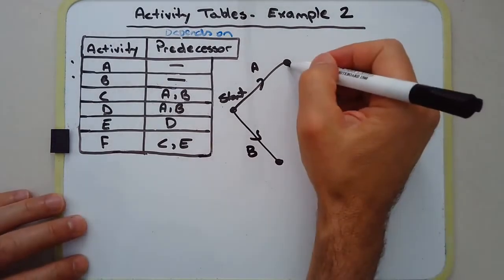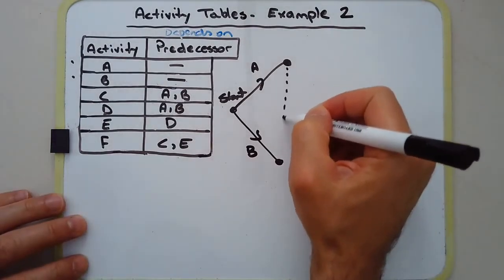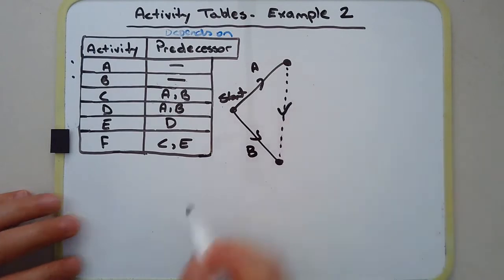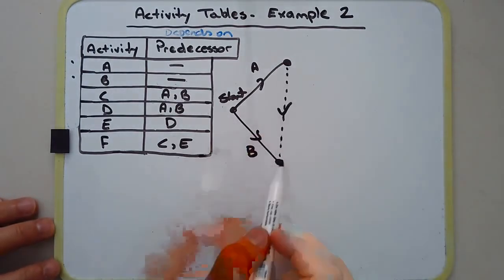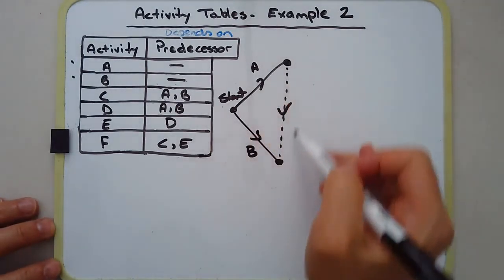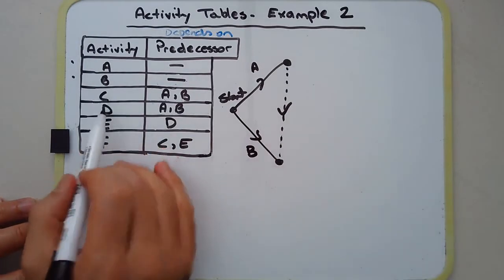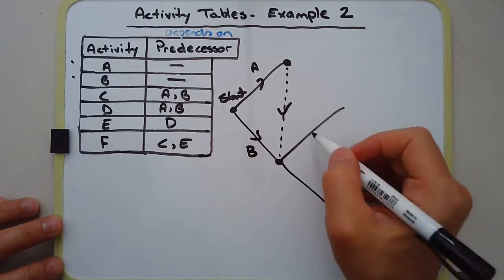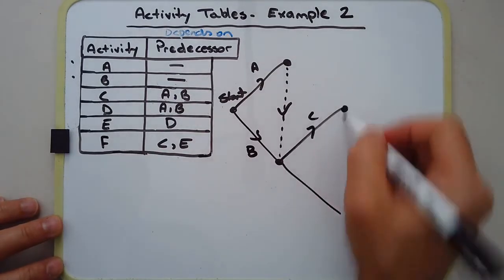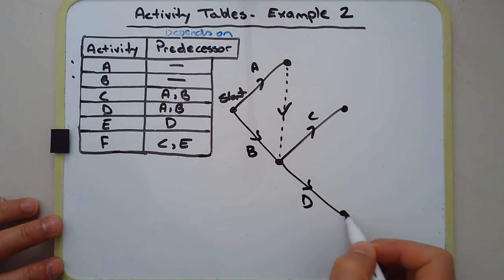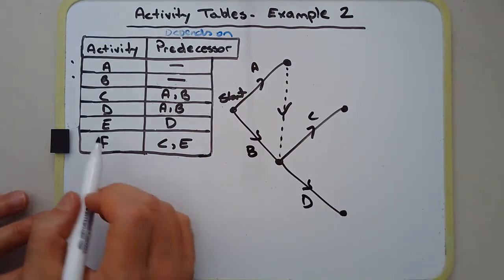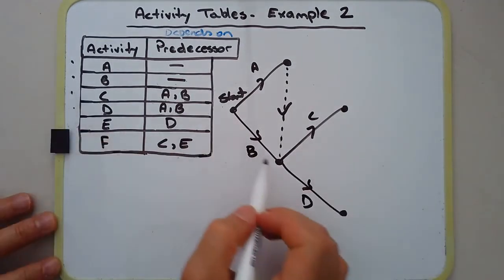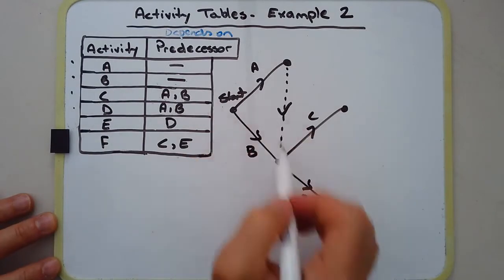So what we're going to do is we're going to draw in activities C and D. Okay, so activities C and D branching off, branching off A and B.